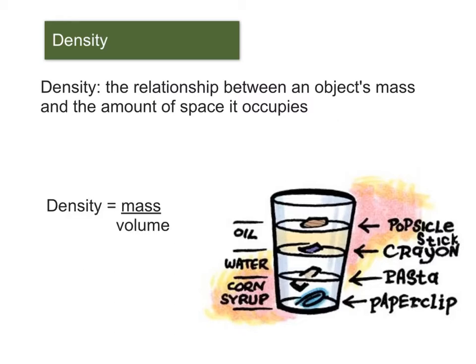And you should be familiar with density a little bit from your everyday life. So you know that certain things float on water and those things have to be less dense in order to float. So here we have a diagram of a popsicle stick, which is made of wood, is floating on top of oil. So it's less dense than the oil. The crayon sinks to the bottom of the oil. So it is more dense than the oil, but it doesn't sink into the water. So it must be less dense than the water. And then a piece of pasta sits between the water and corn syrup. And then corn syrup is the most dense liquid in the cup. But the paper clip falls all the way to the bottom because it's made of metal, which is pretty dense.